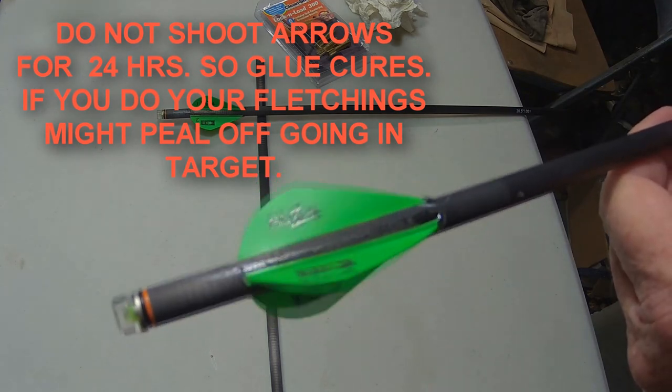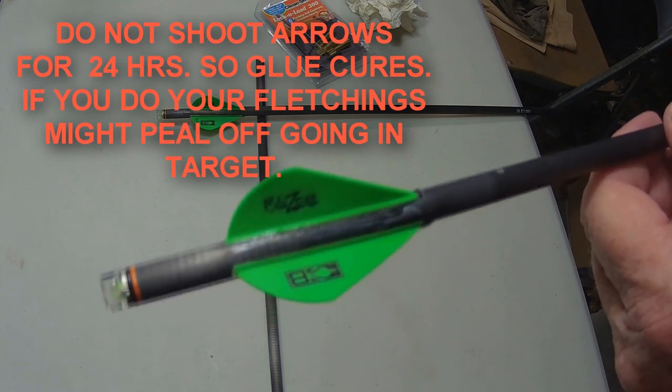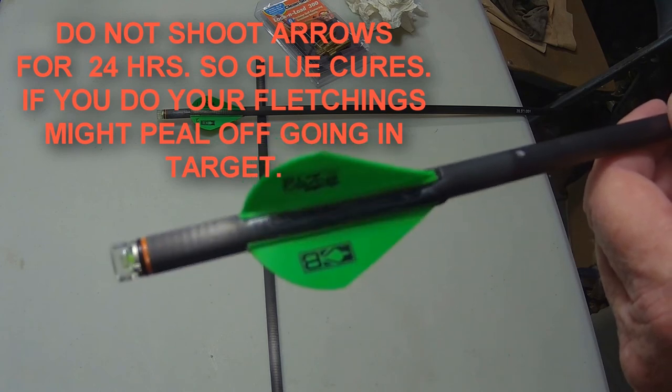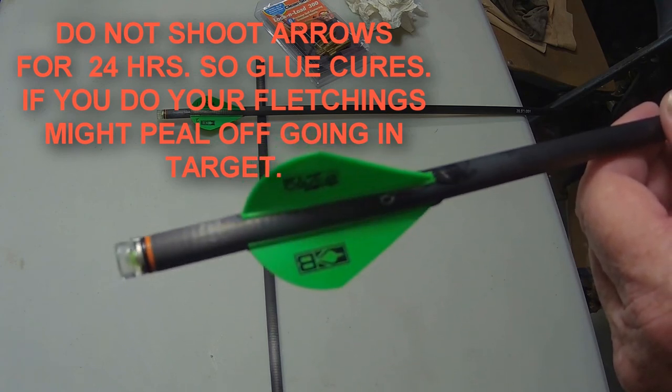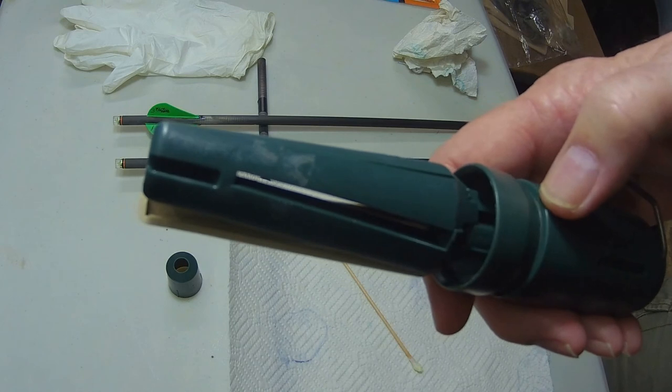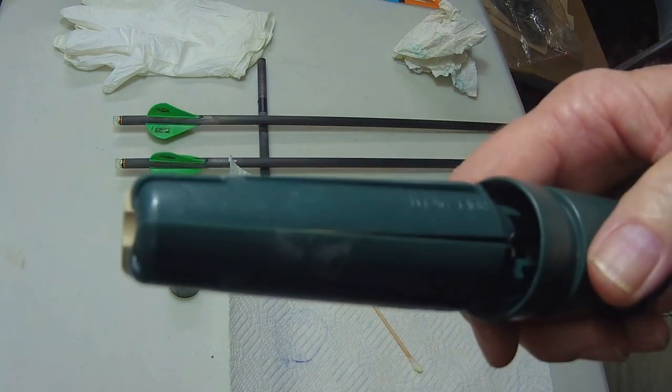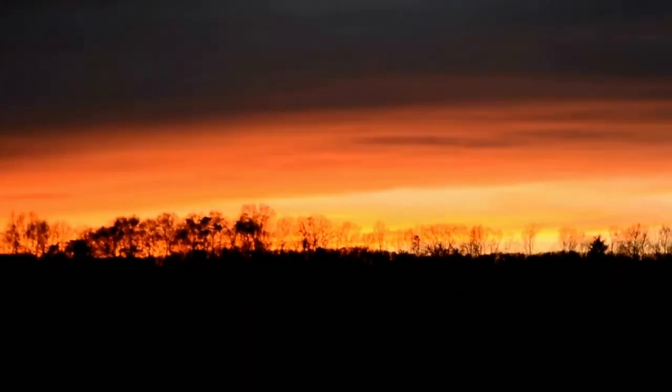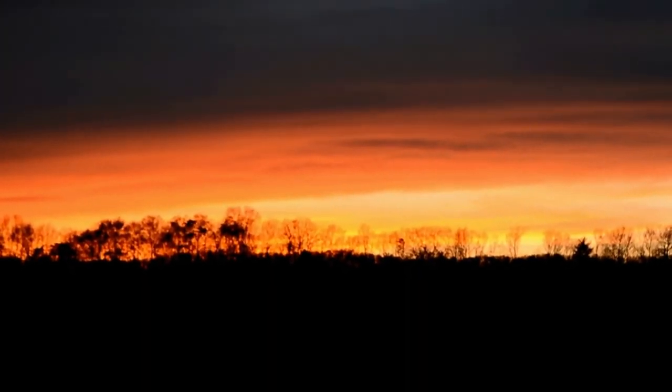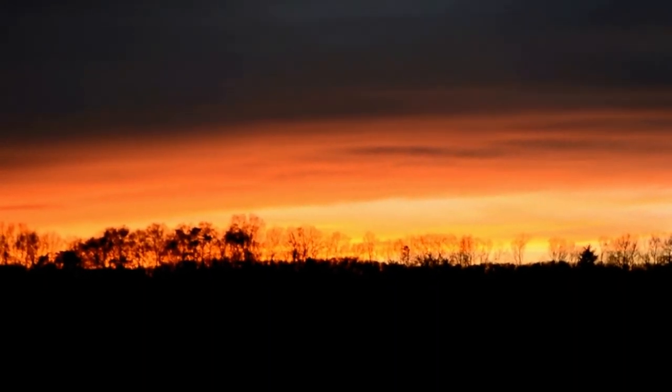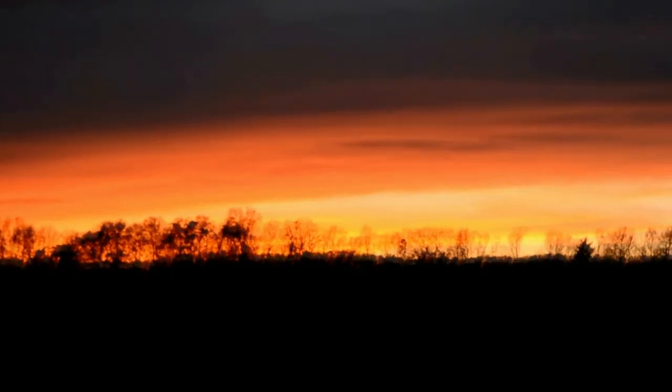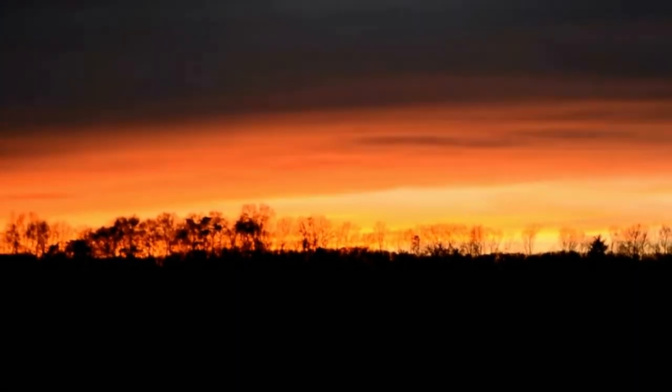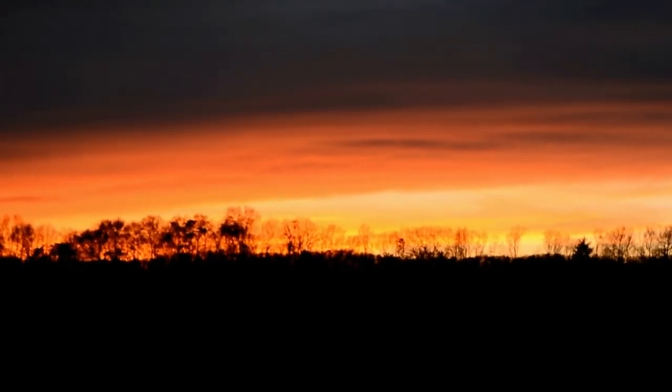If you shoot them before that, it's possible that you could peel the vanes off if they go through your target. So till next time, shoot straight, have tight groups. If you want to learn more on DIY hunting projects and crossbow hunting, start today by hitting the round icon subscribe button and you will keep up to date. Thank you so much for watching and I'll see you next time.